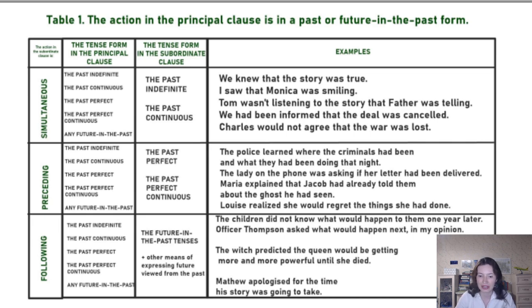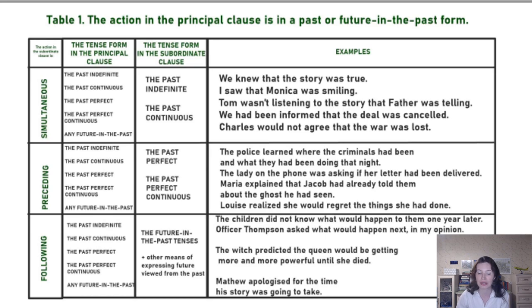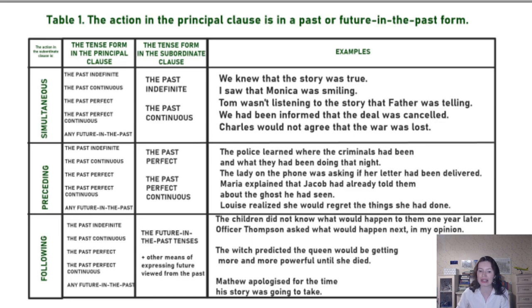For instance: 'The police learned where the criminals had been.' The criminals had been somewhere the night before the police learned of it. When the police learned something, they learned about something which happened even deeper in the past — that's why we use the past perfect and the past perfect continuous.